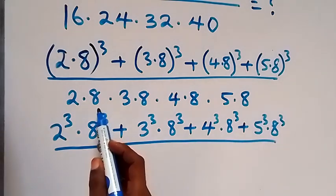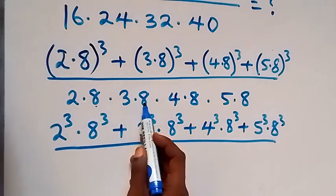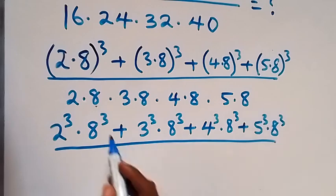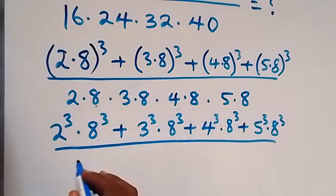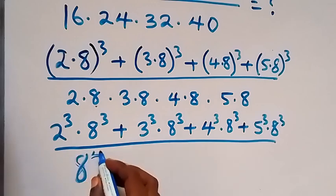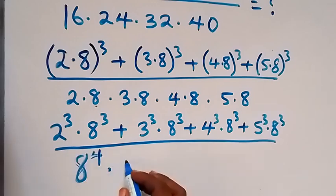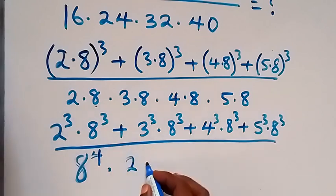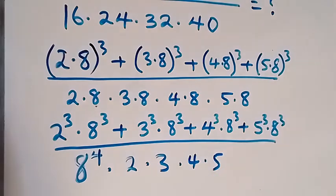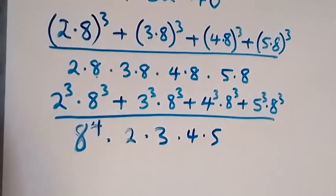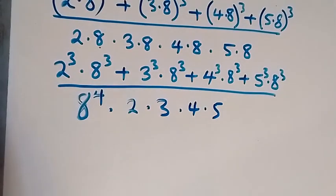From the denominator, 8 is common and it multiplies itself 4 times, so it's the same as writing 8 raised to power 4. Then we multiply by the remaining factors: 2 times 3 times 4 times 5.